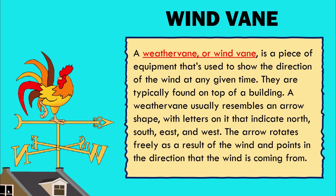What is a wind vane? A weather vane or wind vane is a piece of equipment used to show the direction of the wind at any given time. They are typically found on top of a building. A weather vane usually resembles an arrow shape with letters that indicate north, south, east, and west. The arrow rotates freely as a result of the wind and points in the direction that the wind is coming from.